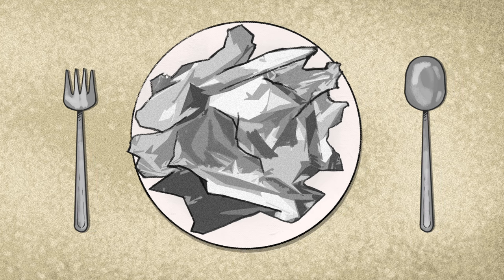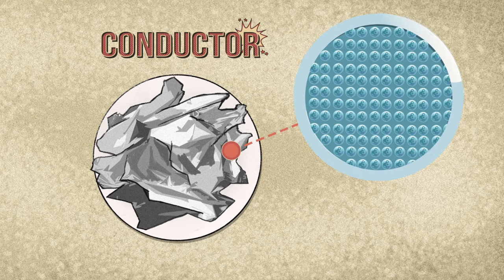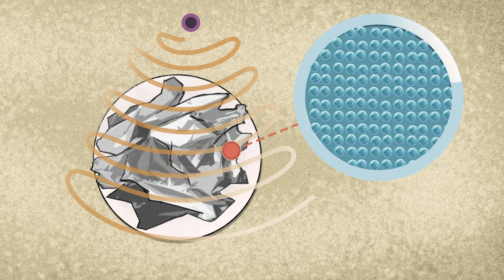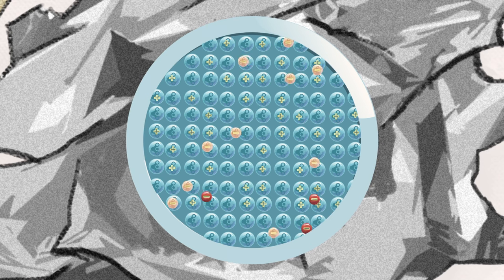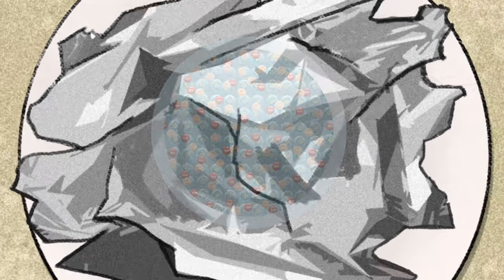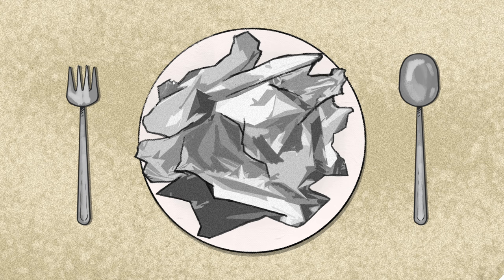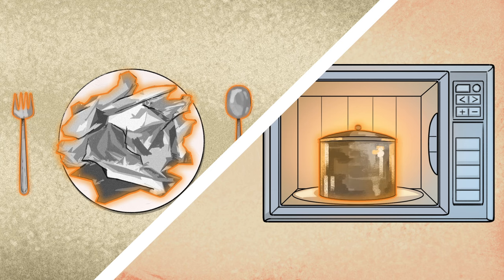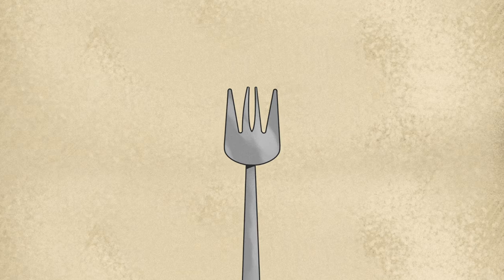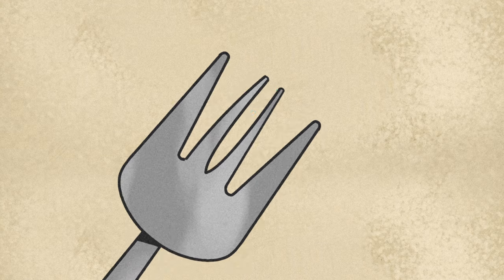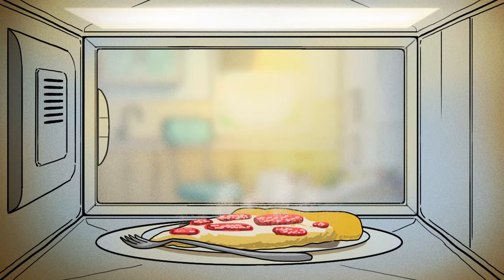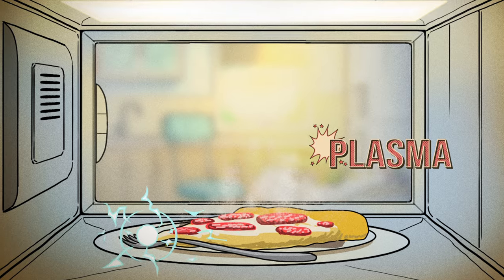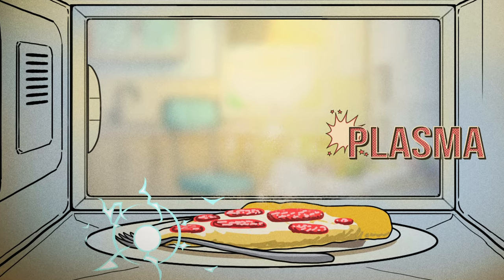Microwaving metal is dangerous, though, right? Well, it depends. Metals are conductors, meaning their electrons are loosely bound to their atoms and move freely in response to electric fields. Instead of absorbing microwave radiation, the metal's electrons concentrate on the surface, leading to high voltages at sharp edges, corners, and small gaps. This includes areas between the creases on a sheet of aluminium foil, the prongs of a fork, or a metal object and the microwave oven's metal walls. Sometimes, voltages get high enough to strip electrons from the surrounding air molecules. This electrically charged gas, or plasma, may then form lightning-like sparks and grow as it absorbs more microwaves. Once the oven is turned off, the plasma dissipates.